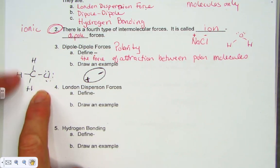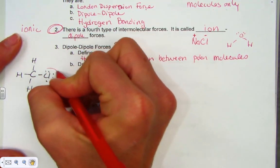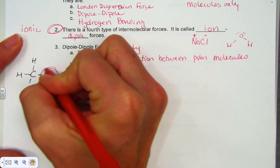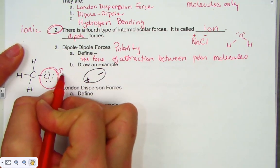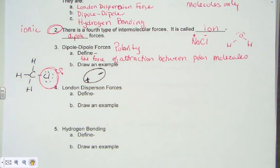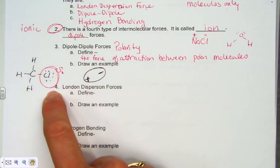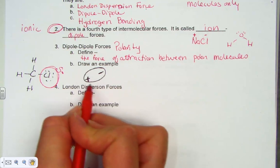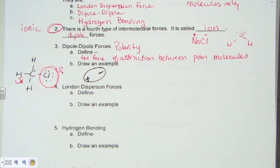Methyl chloride definitely has regions that are more negative than others — the exposed electrons on the chlorine side make that area more negative, showing a partial negative charge. This is clearly a polar molecule because of its unique electron distribution. The opposite side is left partially positive as electron density is pulled in one direction.